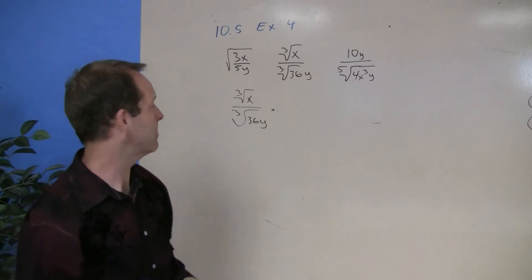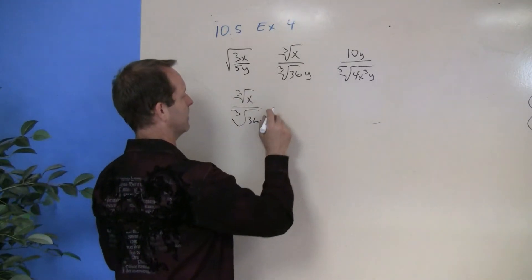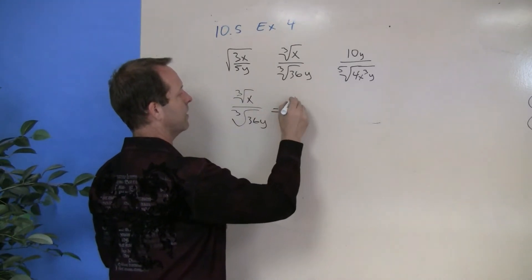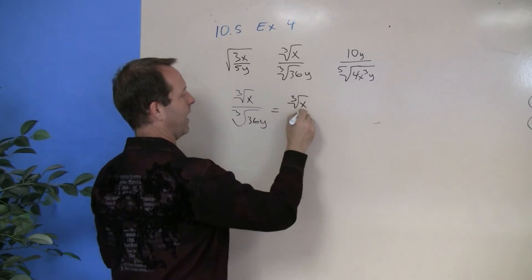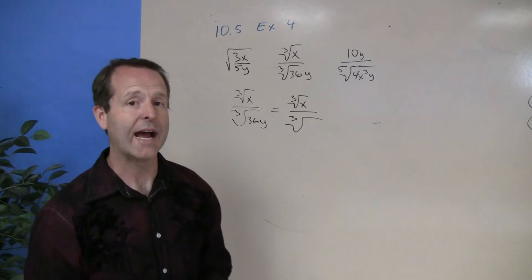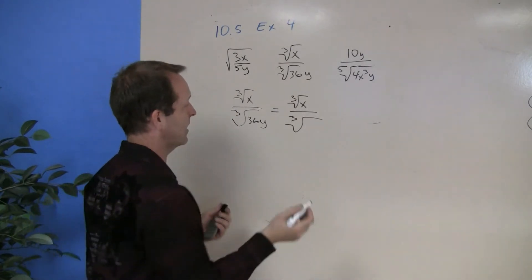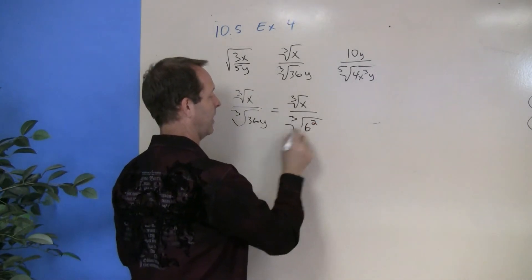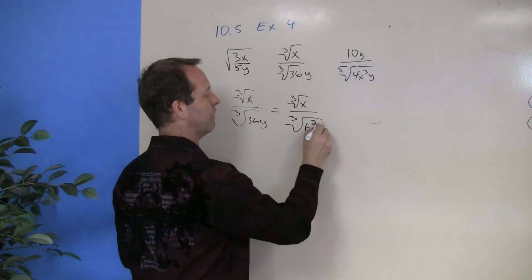Another strategy to use sometimes is to rewrite it like this. So let's just rewrite it first. The cube root of x times the cube root—I'm going to rewrite 36 as 6 squared, because that's where it is. And I'm going to rewrite y as y to the first.